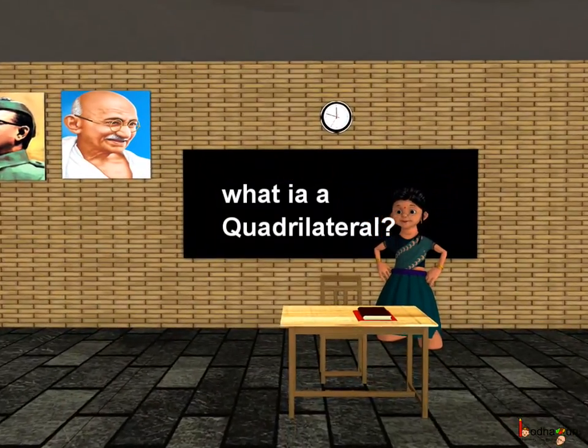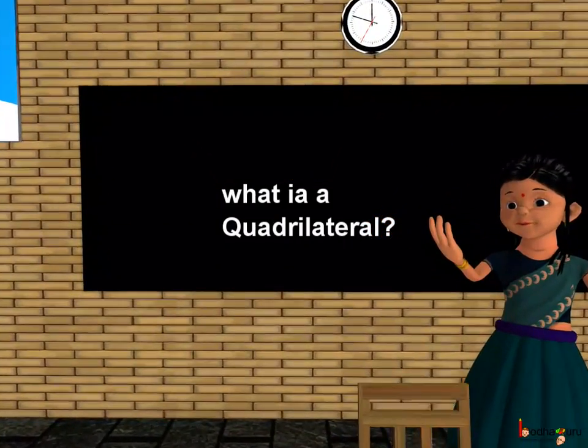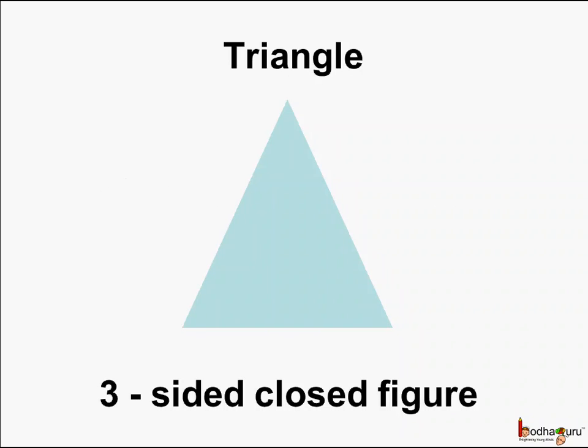Good morning children. Today we shall learn about quadrilateral. We already know a triangle is a three-sided closed figure.